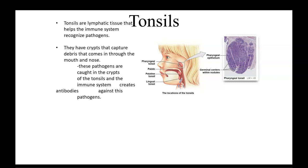Next we have tonsils. Tonsils are lymphatic tissue that help the immune system recognize pathogens. They have crypts that capture debris coming in through the mouth and nose. Pathogens are caught in these crypts, and the immune system is able to recognize them. As it recognizes them and forms a memory, it creates antibodies to fight them. As small amounts of these get into the crypts, the body becomes used to them, learns them, makes antibodies, and is able to fight off these microorganisms — especially if larger amounts come in at another time.